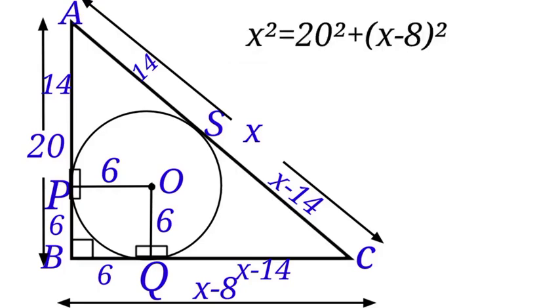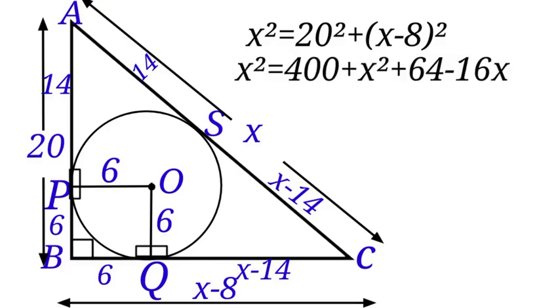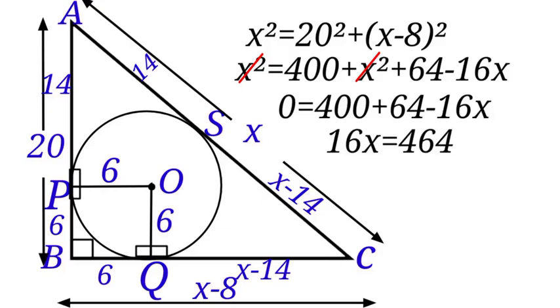X squared equals to 20 squared plus (X minus 8) squared. So X squared will be equals to 400 plus X squared plus 64 minus 16X. X squared and X squared will cancel. 0 equals to 400 plus 64 minus 16X. And then we move 16X to this side of the equation. We have 16X equals to 464. We divide both sides by 16. We have X equals to 29.